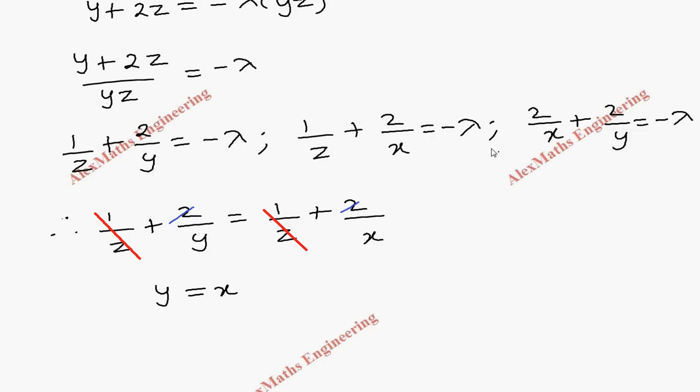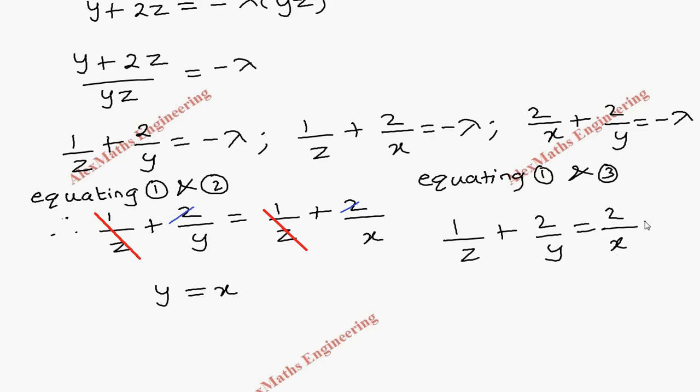In the same way, let's equate first and third. We have equated equations 1 and 2. Now we are going to equate 1 and 3 because both are -λ. So 1/z + 2/y = 2/x + 2/y. So 2/y we can cancel. Then cross multiplying this, x = 2z.